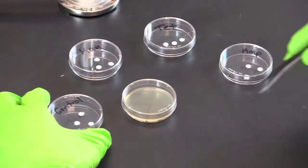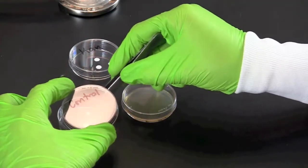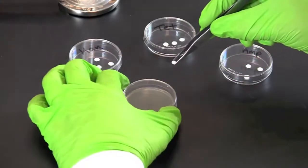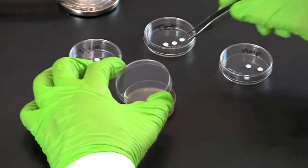Use a sterile pair of forceps to transfer a control disc with no antibiotics to the center of the correct quadrant. Gently press the disc with the forceps to ensure that the disc makes contact with the agar.